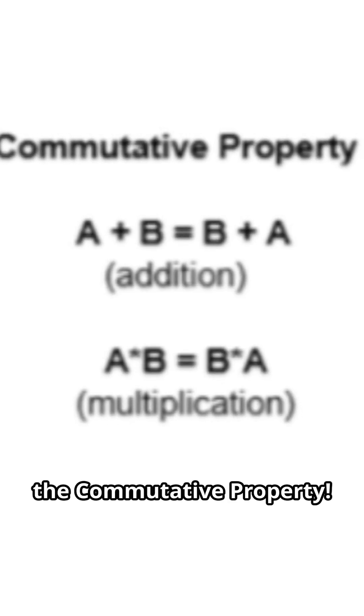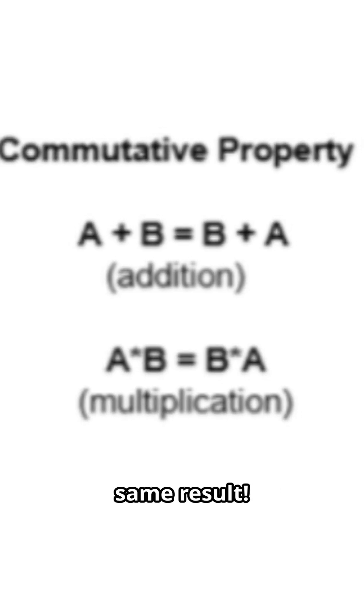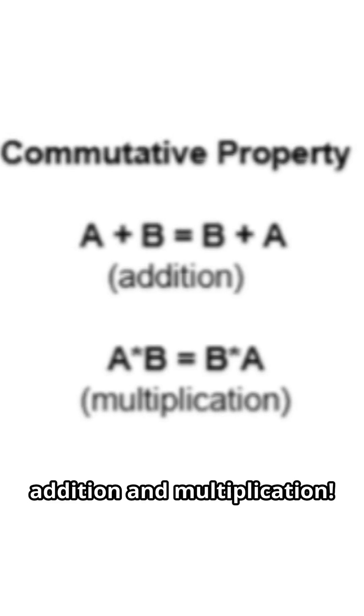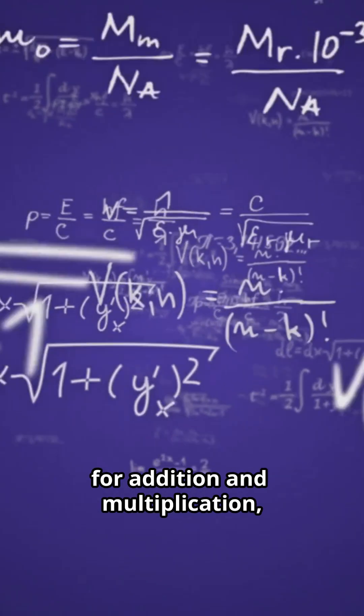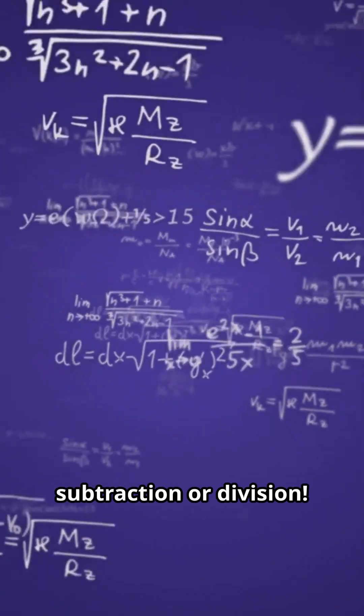Let's start with the commutative property. You can swap the order and get the same result. It works for addition and multiplication. Remember, it works for addition and multiplication, but not for subtraction or division.